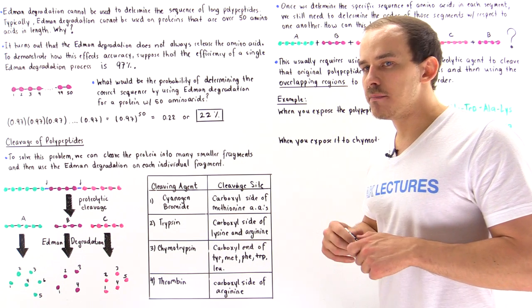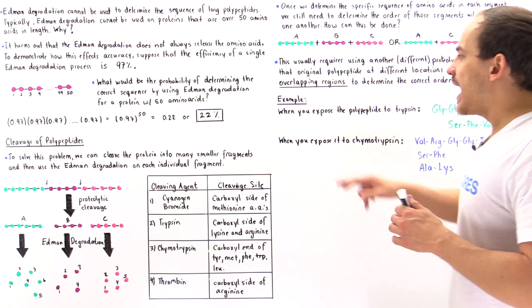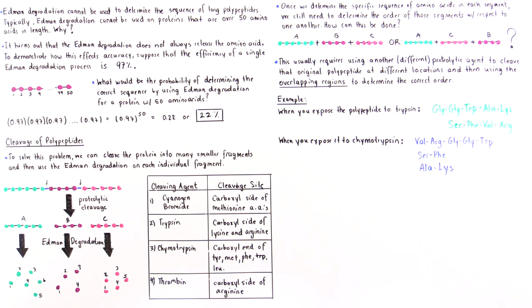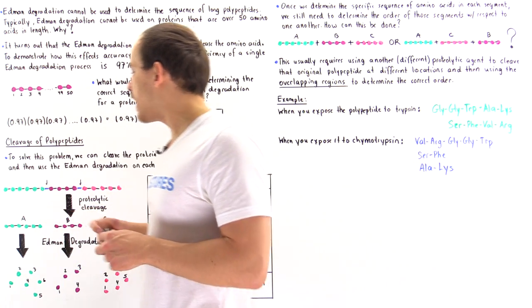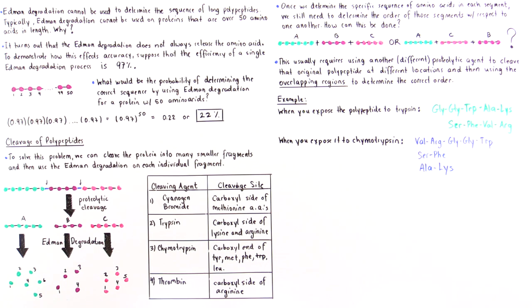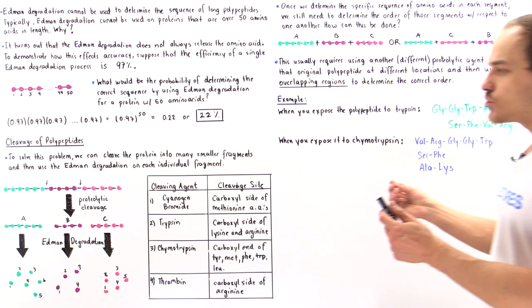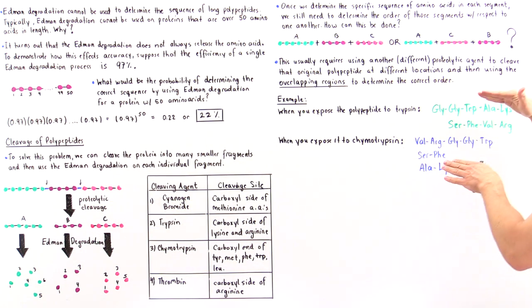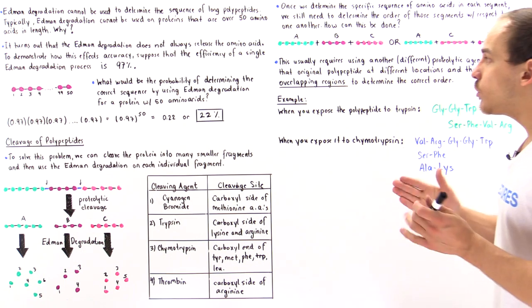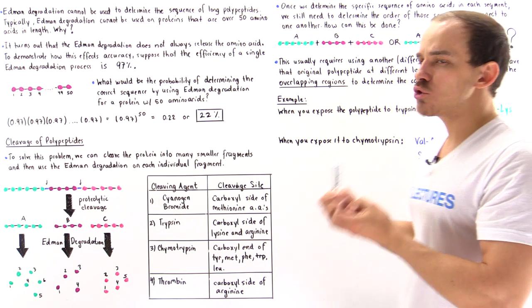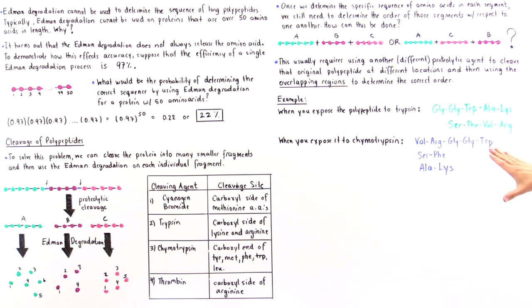In this example, we take a polypeptide and expose it to trypsin, giving us two fragments. We then take that same full polypeptide and expose it to chymotrypsin, giving us three fragments. Assuming we use the Edman degradation process on each fragment so we know exactly what the sequence is, we now want to piece these fragments together and find the correct order using the overlapping regions.